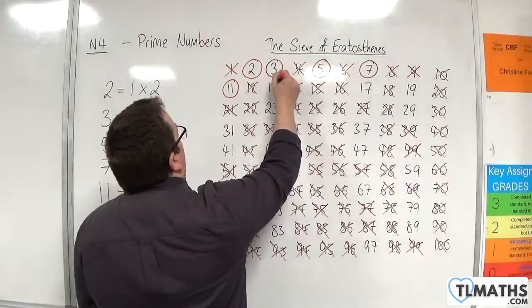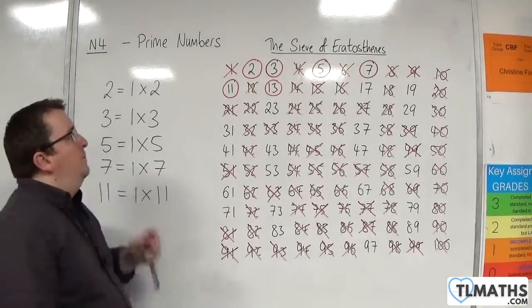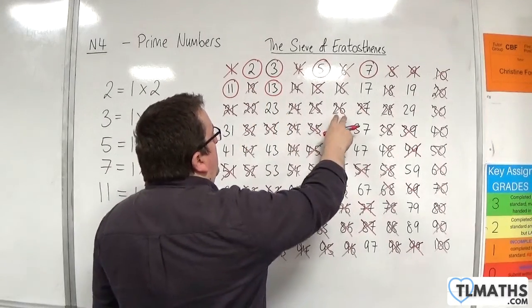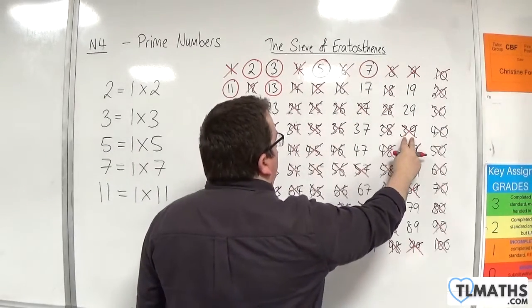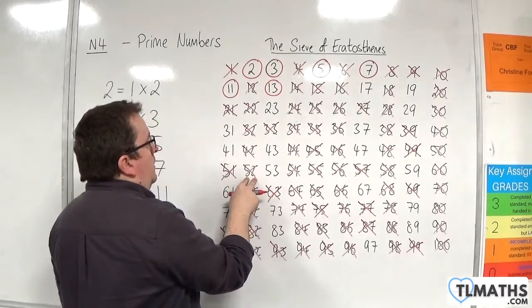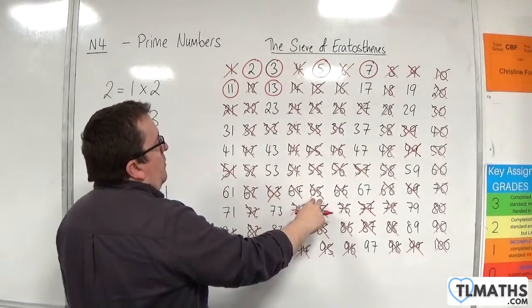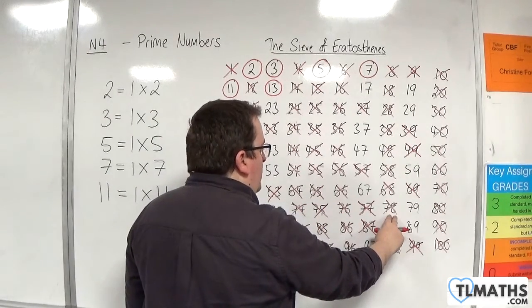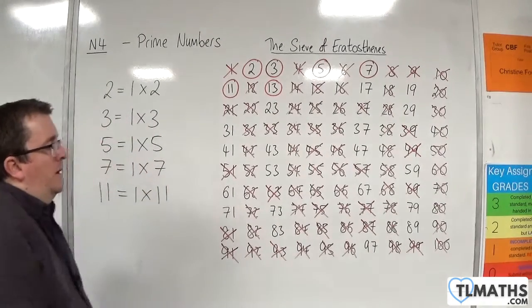So the next number in the list is thirteen which must be prime. So thirteen, then twenty-six cannot be prime, then thirty-nine, then fifty-two, then sixty-five, then seventy-eight, then ninety-one. And then I'm out.